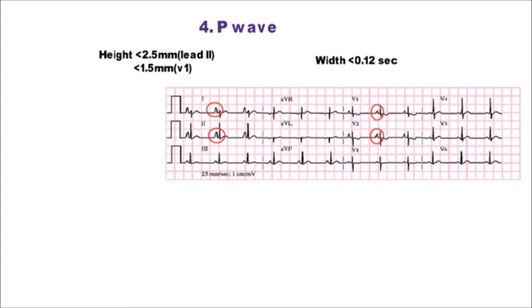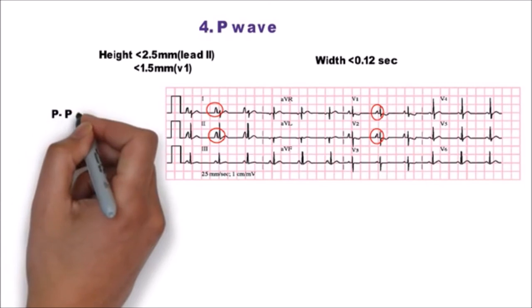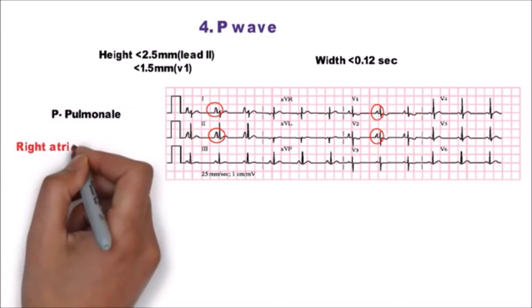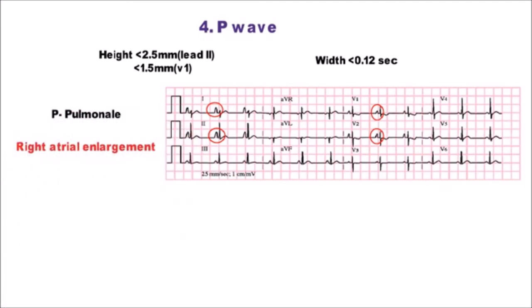In this ECG as you can see in lead 1, p-waves are tall and peaked. These are called as p-pulmonale which is seen in right atrial enlargement.